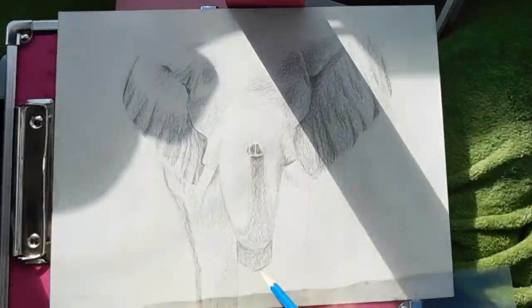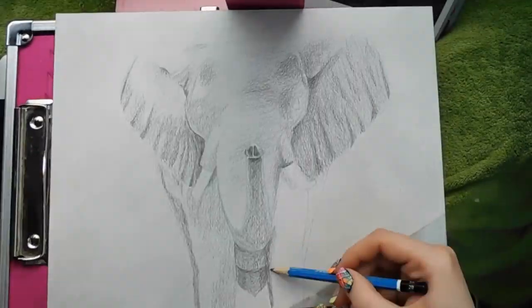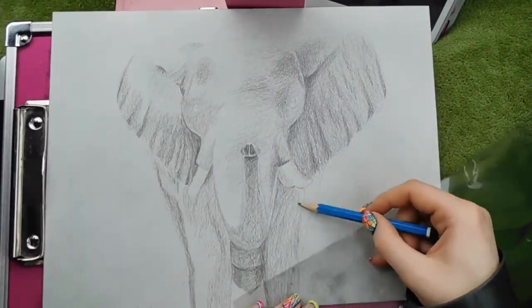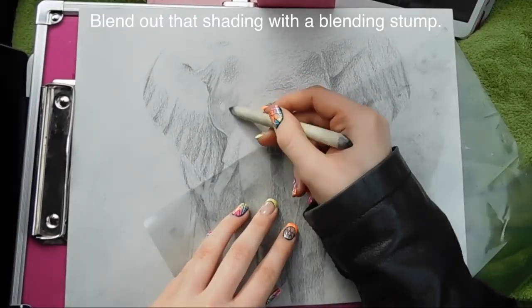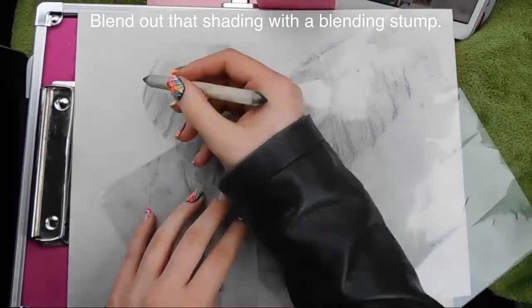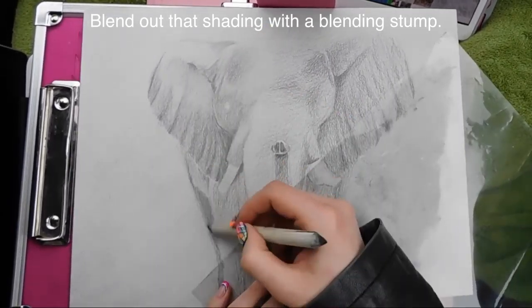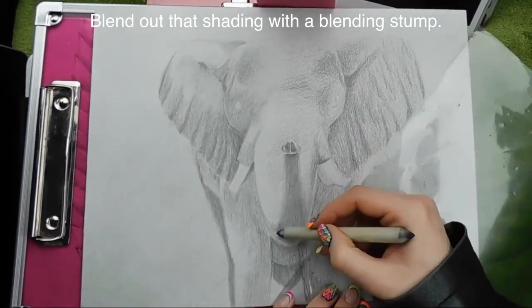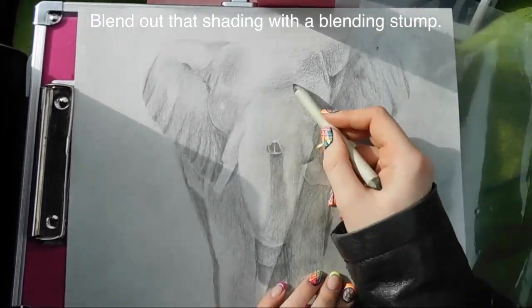I'm just going to deepen the color in the ears, trunk, and head. Using a blending stump, I'm going to blend out all of that. You want all these lines to remain nice and soft at this point. I'll harden some of the edges later, but for now everything stays soft.